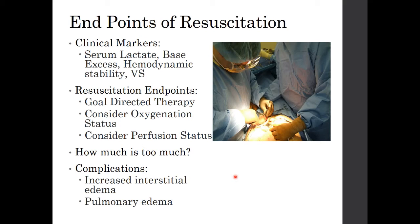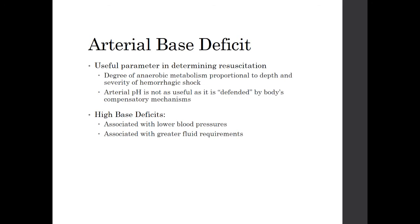How much is too much? If the patient continues refractory to therapy, complications are what we look at. If they have increasing interstitial edema — particularly pulmonary edema — or they occlude their airway with large volume, this is the time to stop regardless of whether clinical markers are resolved. The arterial base deficit is a useful parameter to determine resuscitation, obtainable from ABGs. It reflects the degree of anaerobic metabolism proportional to the depth and severity of hemorrhagic or even septic shock. Arterial pH is not as useful because the body's compensatory mechanisms defend it.